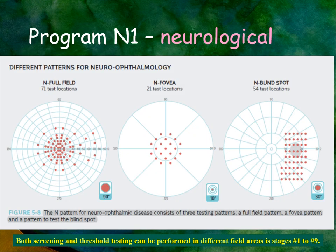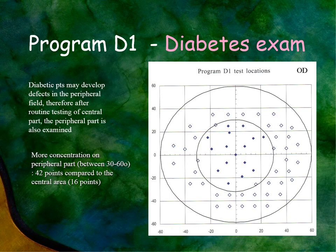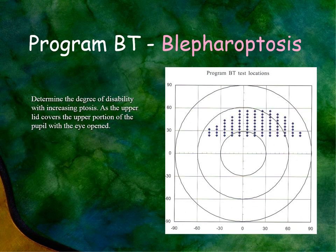The neurological program can be related to the full neurological field, the fovea, or the blind spot — so there are three N programs available. The diabetes program tests points located in areas known to be affected by diabetic visual field changes.